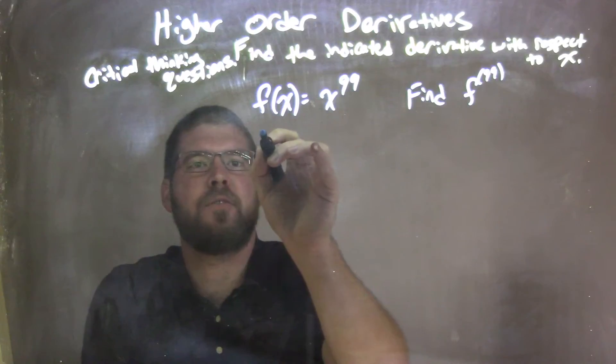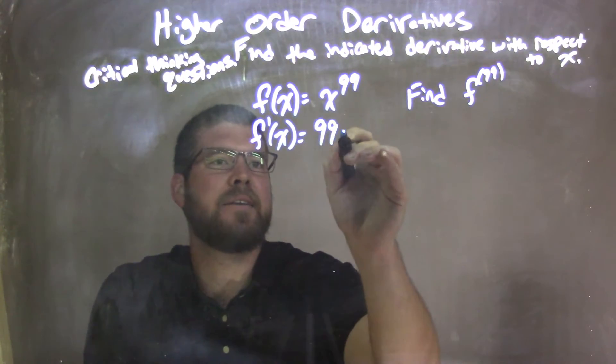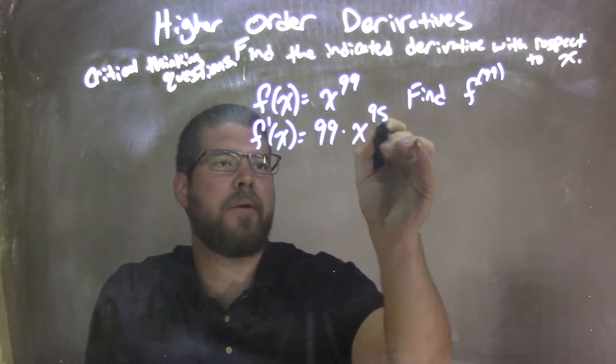So let's just find the first derivative. f prime of x is 99 times x to the 98th power.